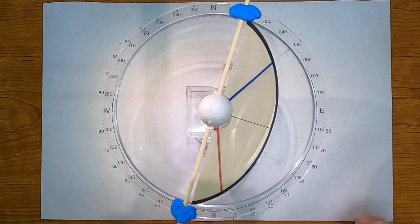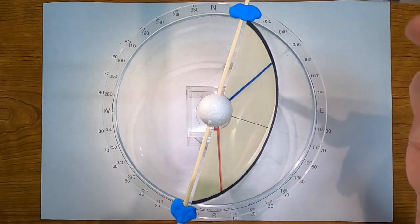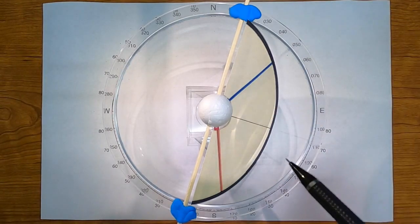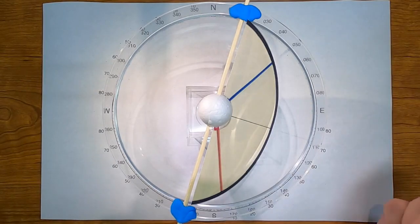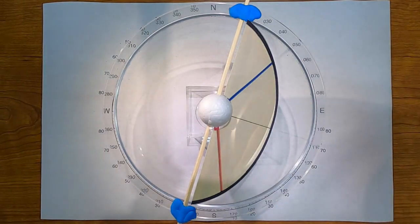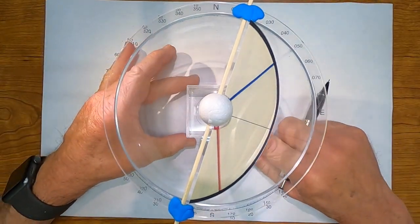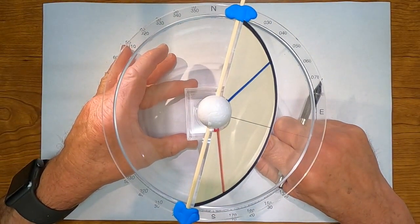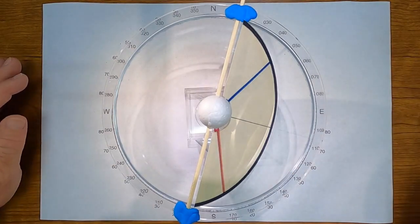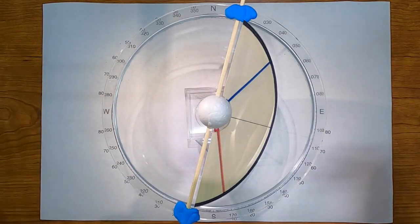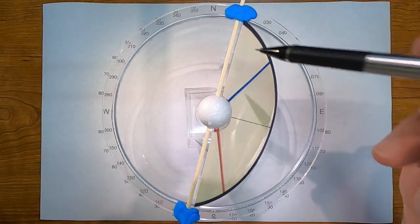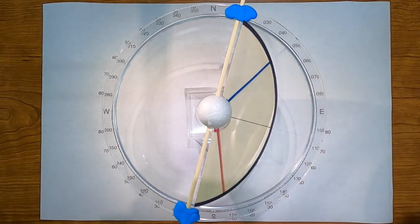So, this is now the plane that is fit to those two apparent dips. That plane should strike at 016 and it dips 38 degrees to the southeast. I'm not quite sure it looks perfectly like that, but ideally, that would be the case. All right, so again, all we've done is we have fit a plane to the two apparent dips.